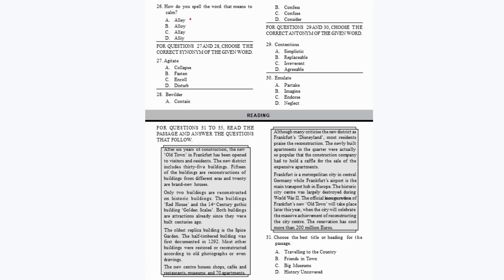For question 26: 'Alley' is a narrow passage between buildings — not correct. 'Alloy' is a metal made by combining two different metals — not correct. 'Allay' means to calm or relieve, so option C, 'allay,' is the correct answer.